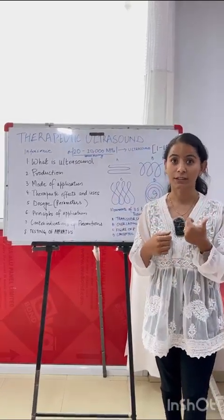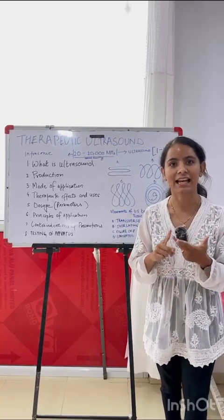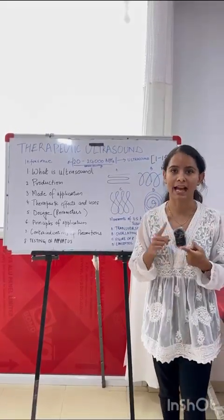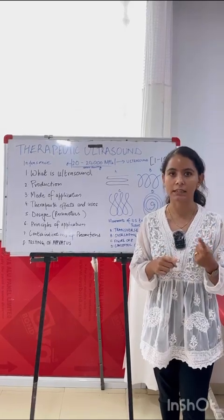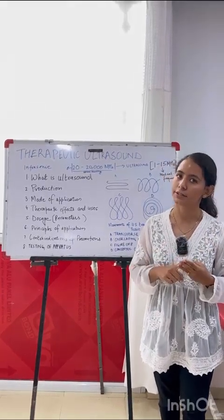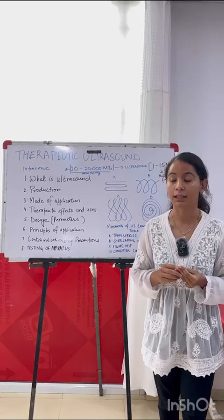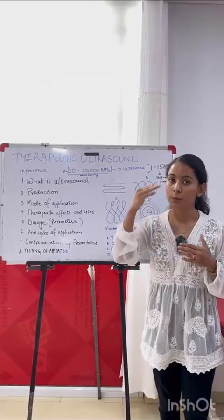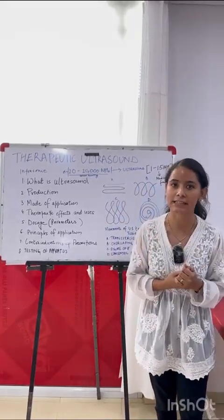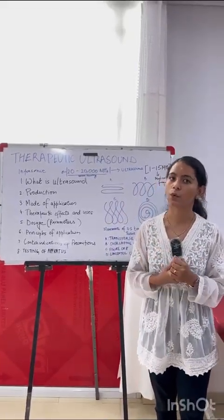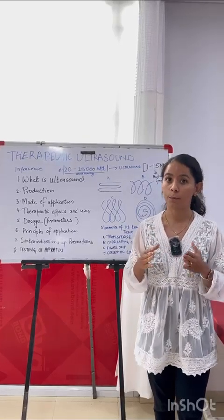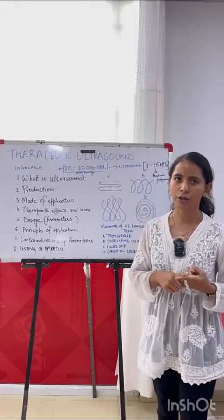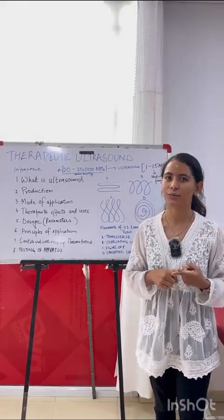For the parameters for dosage, there are four parameters: mode, frequency, intensity, and duration. Mode, as we discussed, has two options — continuous and pulsed. For frequency, we use 1 MHz and 3 MHz for ultrasound application in physiotherapy; the medical frequency ranges from 1 to 15 MHz. As the frequency increases, the depth of penetration decreases. The unit for intensity is Watt per centimetre square, and the intensity ranges from 0.1 to 1 Watt per centimetre square. For duration, we need to check the condition and decide accordingly.